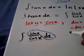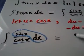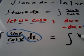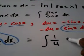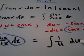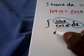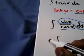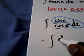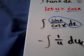So this right here equals the integral of 1 over u times negative du. Alright. So now we just pull that negative out of the integral. So we have negative integral of 1 over u du.